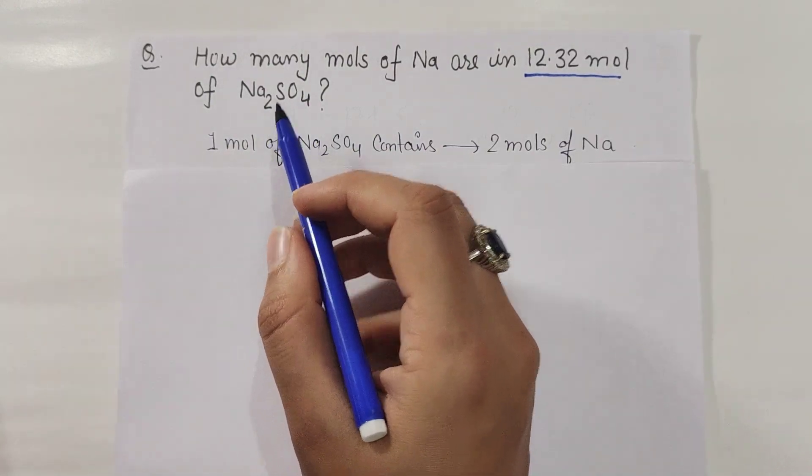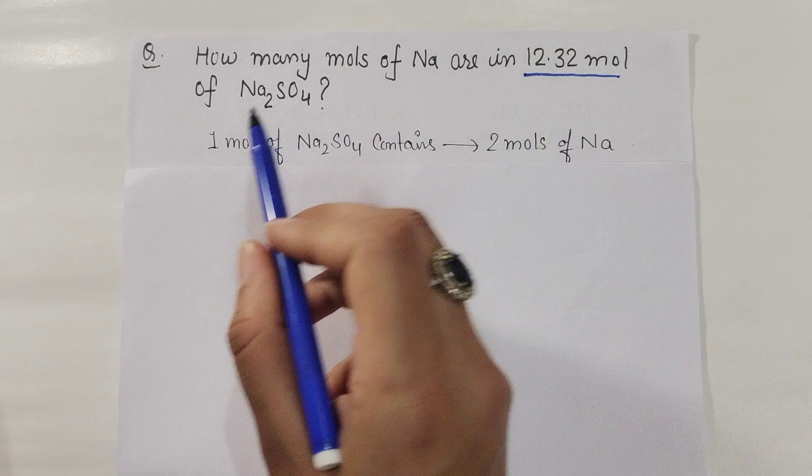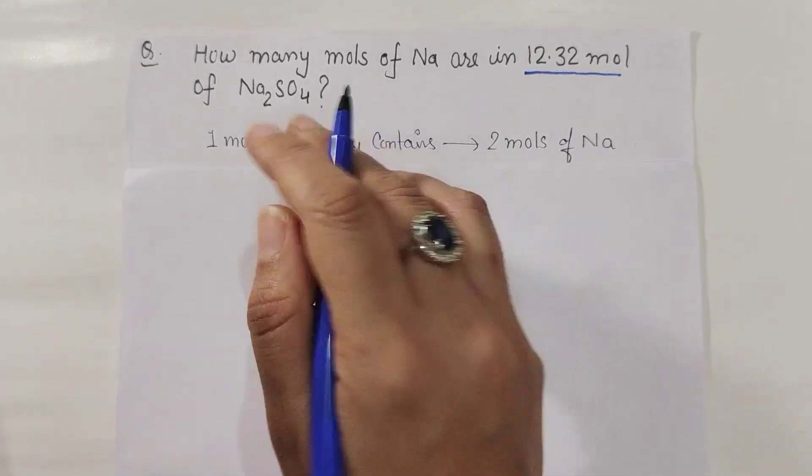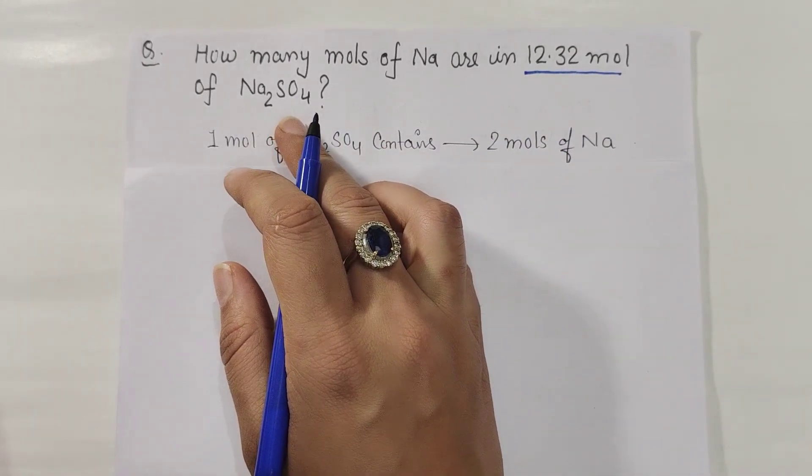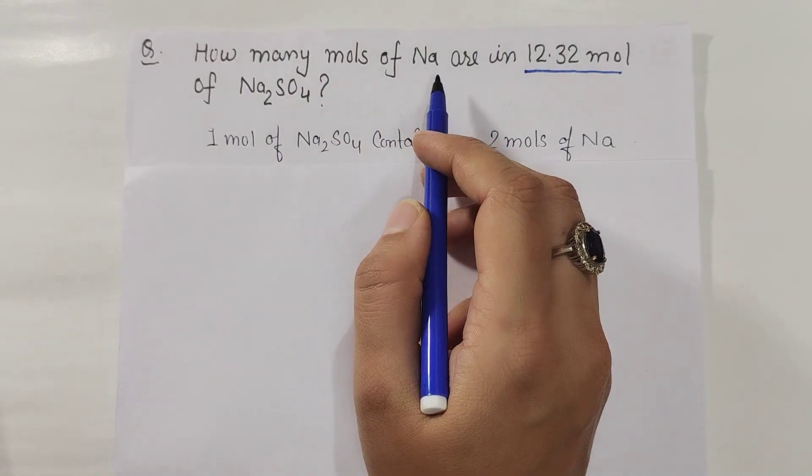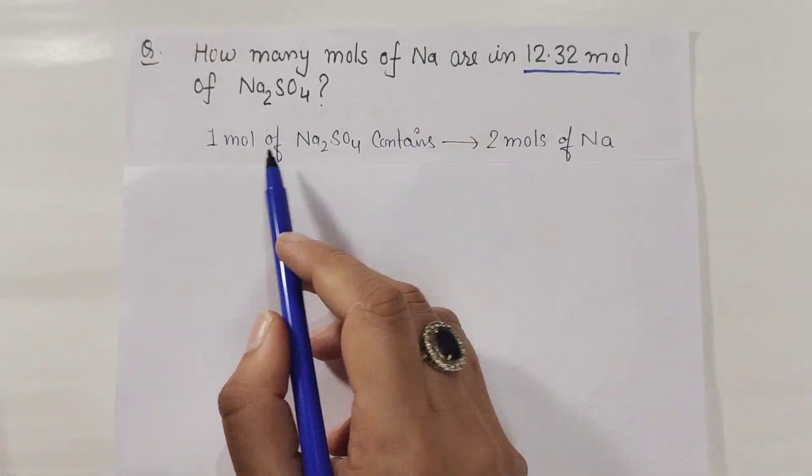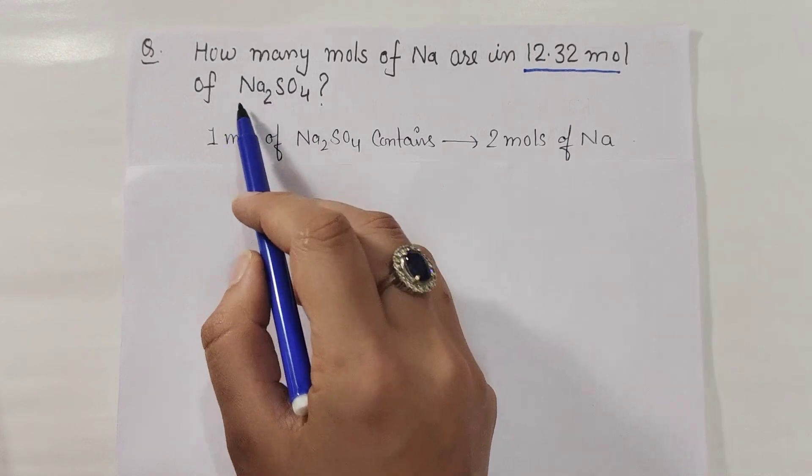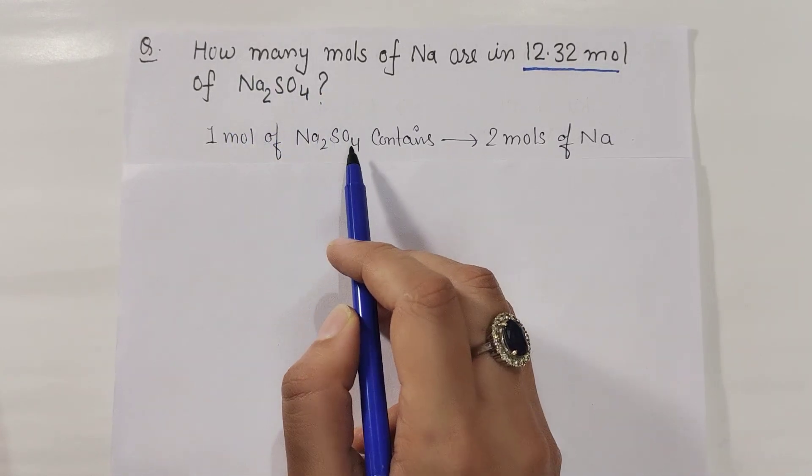In this question, if you have 12.32 mole of sodium sulfate given, then let me know from that sodium sulfate how many moles of sodium are present. So now, 1 mole of sodium sulfate, if we take only 1 mole of sodium sulfate...